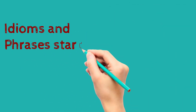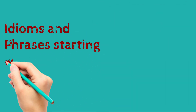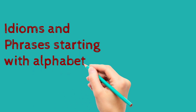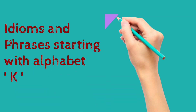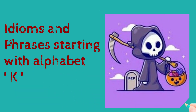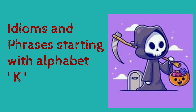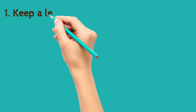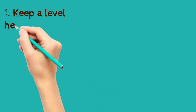In this video we will be studying idioms and phrases starting with the alphabet K. We are just continuing the series — other alphabet idioms and phrases are already uploaded. So let's start today's video. The first one is 'keep a level head'.